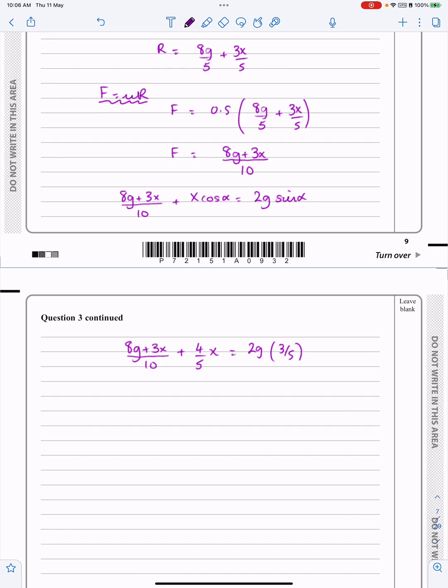Tidying this all up, I've got 8g over 10, that's really 4g over 5, 3X over 10, four-fifths X is equal to 6g over 5. If you take those over to both sides, I get 11X over 10 on one side, there's 2g over 5 on the other side, which means that X works out to be 4g over 11.